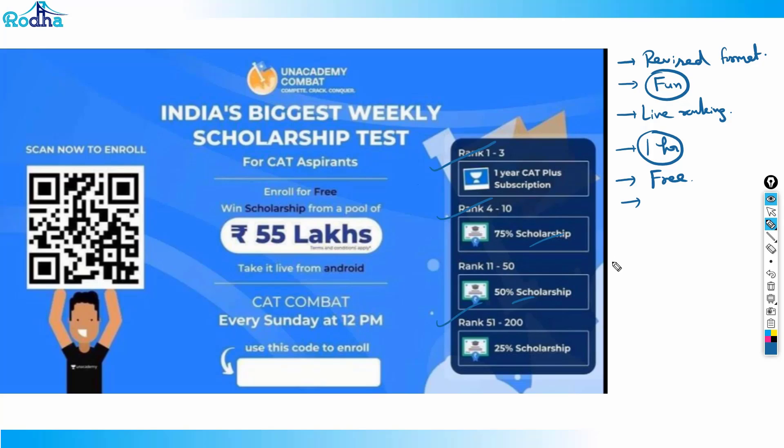Get it live from your mobile app. I'll put a link here. The invite code you can put is 'raviroda'. It's absolutely free of cost. When it asks for an invite code, put 'raviroda' and the link I'll put in the description. Just enroll from there. And do give this every Sunday at 12 p.m. Every Sunday at 12 p.m. Thank you.